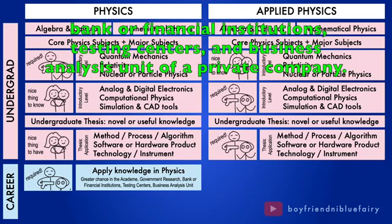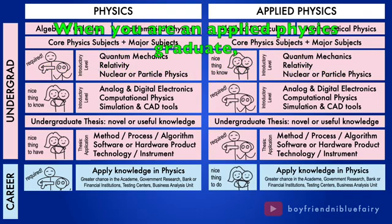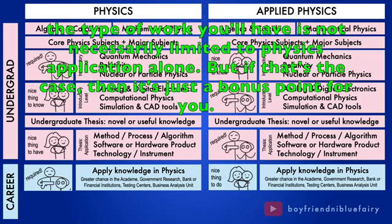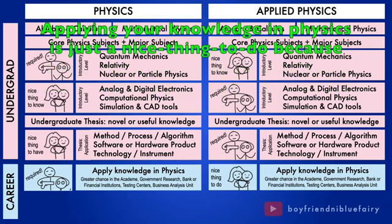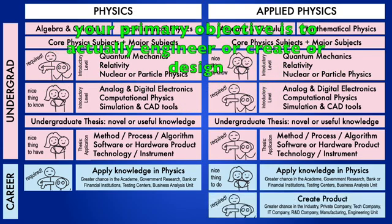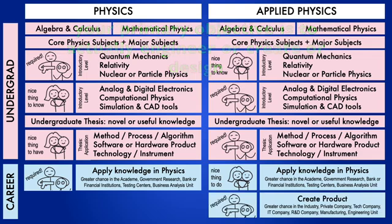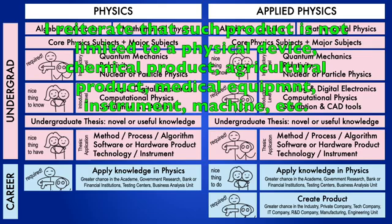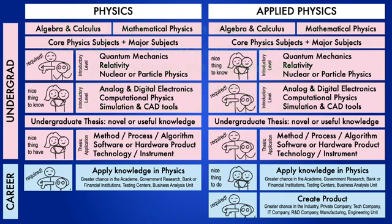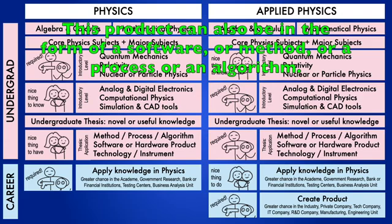When you are an applied physics graduate, the type of work you'll have is not necessarily limited to the physics application alone. But if that's the case, then it's just a bonus point for you. Applying your knowledge in physics is just a nice thing to do because your primary objective is to actually engineer or create or design or implement a product. Your product is your work output. Again, I reiterate that such product is not limited to a physical device, chemical product, agricultural product, medical equipment, instrument, machine, etc. This product can also be in the form of a software or method or a process or an algorithm.